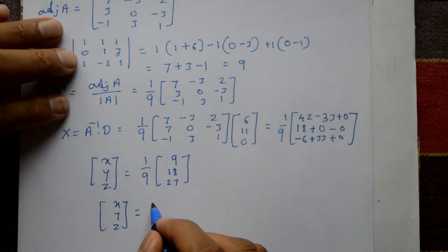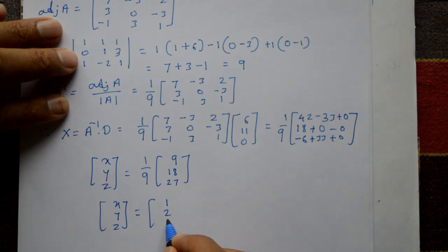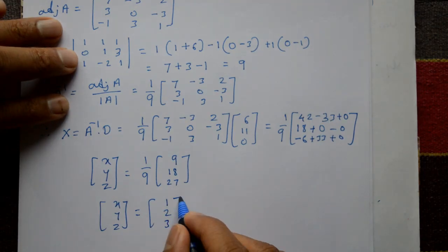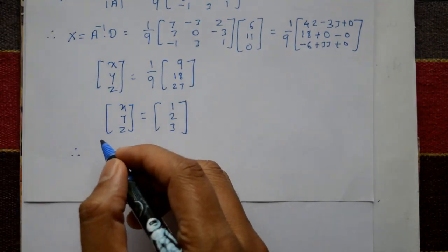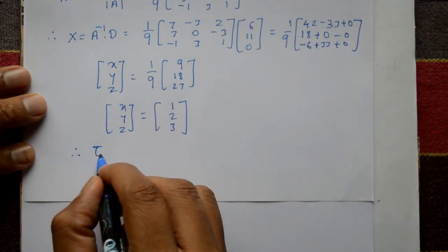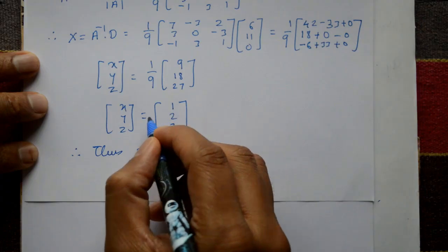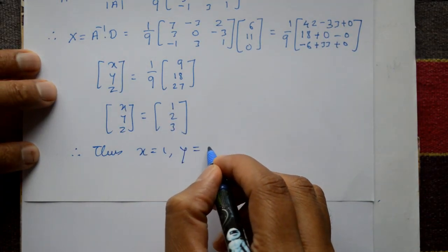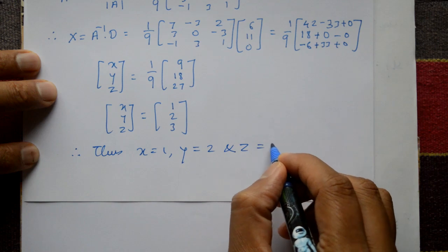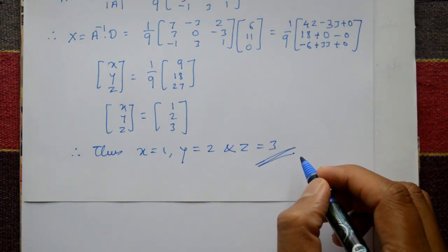So xyz equals 1/9 into [9, 18, 27], giving x equals 9/9 equals 1, y equals 18/9 equals 2, and z equals 27/9 equals 3. Therefore x equals 1, y equals 2, and z equals 3. These are the required values.